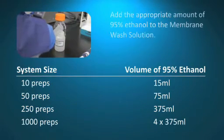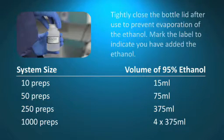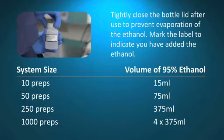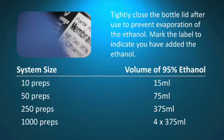Add the indicated volume of 95% ethanol to the membrane wash solution, then record this addition on the bottle label. Tightly close the bottle cap after each use to prevent evaporation.